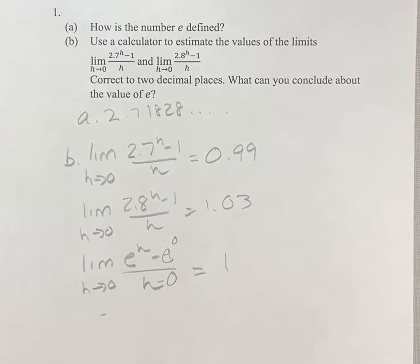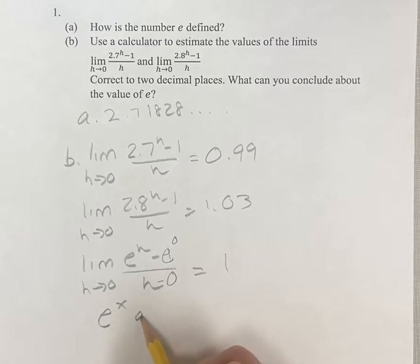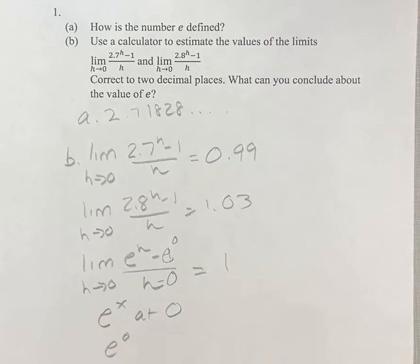This is basically saying the derivative of e to the x at 0. So e to the 0, the derivative of that is equal to 1.